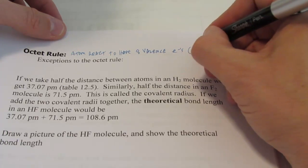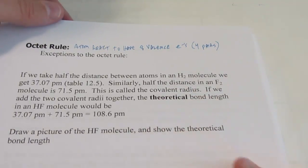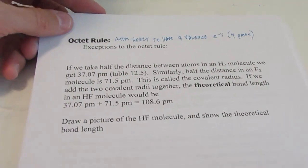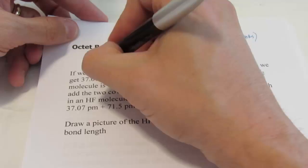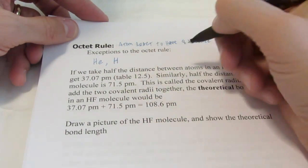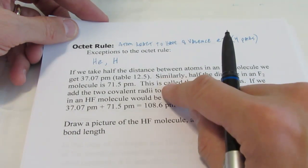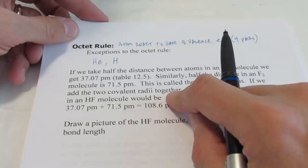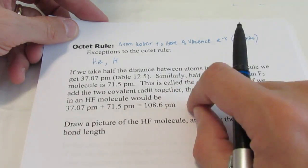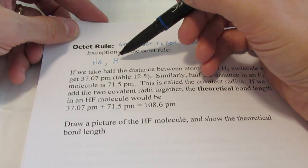Instead of saying eight, remember we often like to say four pairs. Now we just saw that there are some exceptions to the octet rule. Helium only needs one pair. Hydrogen only needs one pair around it to be considered stable.